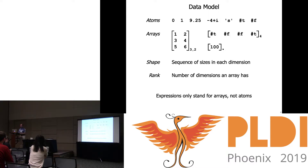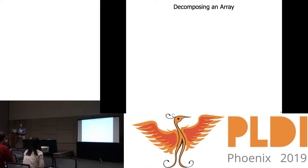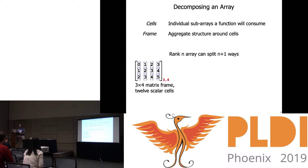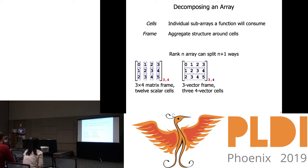As a general rule in this language, expressions only really stand for arrays — you can't get your hands on an atom on its own. When you decompose an array as part of function application, you break it up into what are called cells, which are the individual sub-arrays the function is going to consume. The frame is whatever aggregate structure exists around these cells. For an n-dimensional array there are n+1 possible decompositions. For a 3×4 matrix we can say it's a 3-by-4 frame containing 12 scalar cells, or a 3-vector frame containing 4-vector cells, or a scalar frame containing a single 3-by-4 matrix cell.